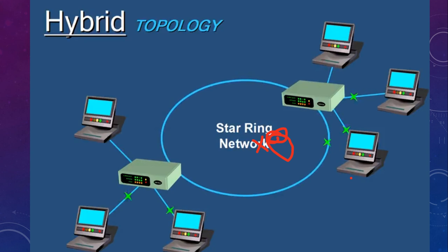Another hybrid topology is star-ring. In star-ring, two star networks are connected to each other in the form of a ring, so that even if the connection breaks at one point, connectivity is still available through the other side.